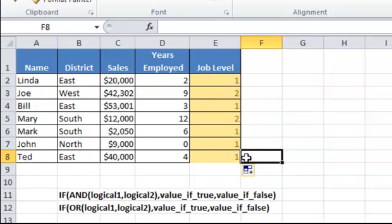Similarly, you can use a nested OR function if you want a job level code of 2 to be applied to an employee that meets either criterion instead of both criteria. A nested OR function works the same way as an AND function, except that it will return the TRUE value if any of those criteria are met, instead of requiring that all criteria are met, like with the AND function.